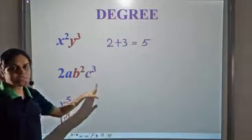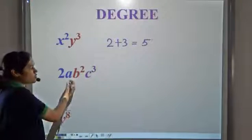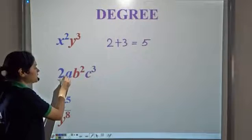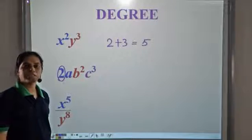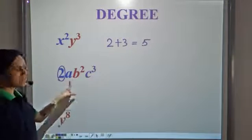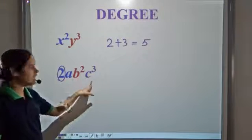What about this? Now we have 2 into a, b square, c cube. We do not consider the constant term while calculating degree. We simply consider the power of the variables. So we have three variables a, b, and c. We consider the power of these three variables.